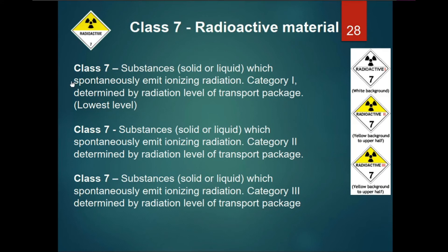Class 7 includes radioactive materials: substances which may be solid or liquid that spontaneously emit ionizing radiation. Category 1 is determined by the lowest radiation level of the transport packaging. Category 2 is determined by a higher radiation level of the transport package. Category 3 is also determined by the radiation level of transport packaging, representing the highest category.